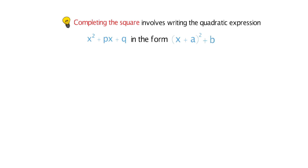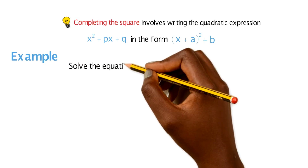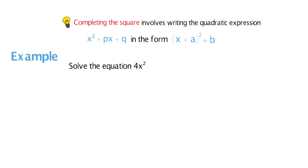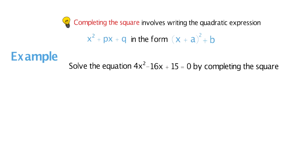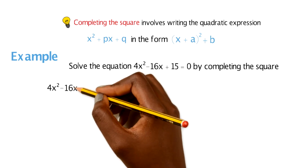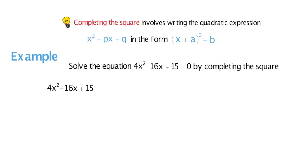I'm going to go through an example with you just so you understand what I'm talking about. So in Example 1, if a question says solve the equation 4x squared minus 16x plus 15 equals 0 by completing the square, the first thing I would do is rewrite the quadratic formula: 4x squared minus 16x plus 15. Then we need to divide the whole equation by 4.